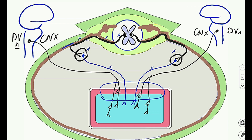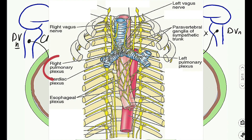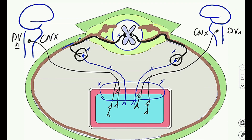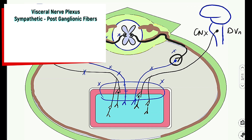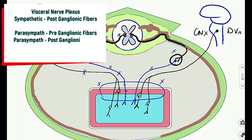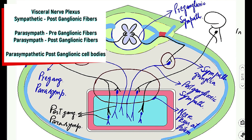At the level of the hilum, there is a collection of fibers and cell bodies called a plexus. In the thorax: for the lungs we have the pulmonary plexus; for the heart, the superficial and deep cardiac plexuses; and there is also the esophageal plexus. All these plexuses have the same composition: parasympathetic fibers — both pre-ganglionic and post-ganglionic varieties — as well as sympathetic fibers, which are only the post-ganglionic variety.